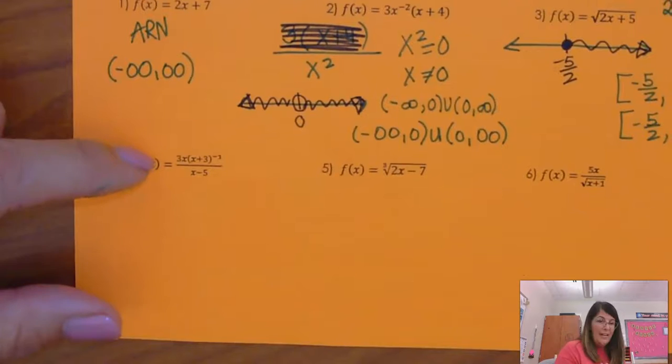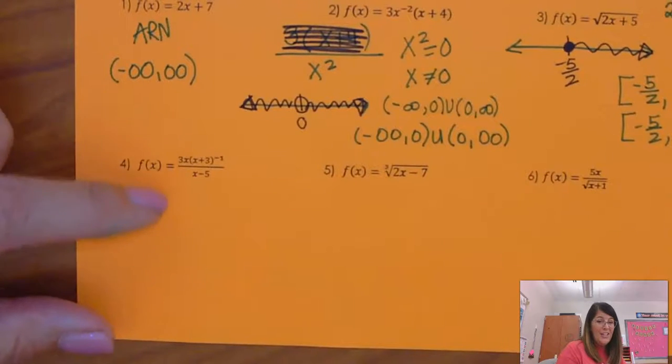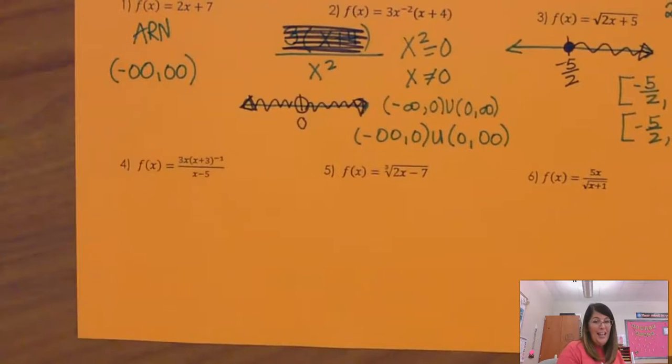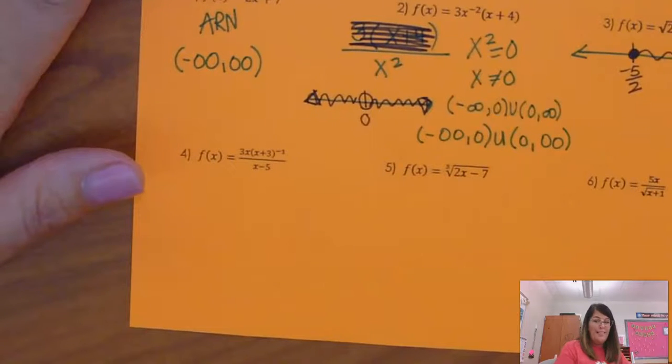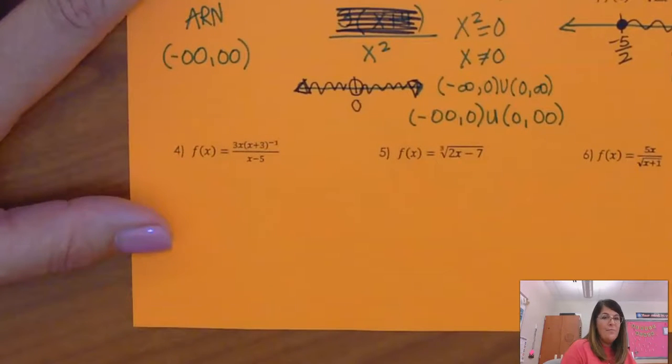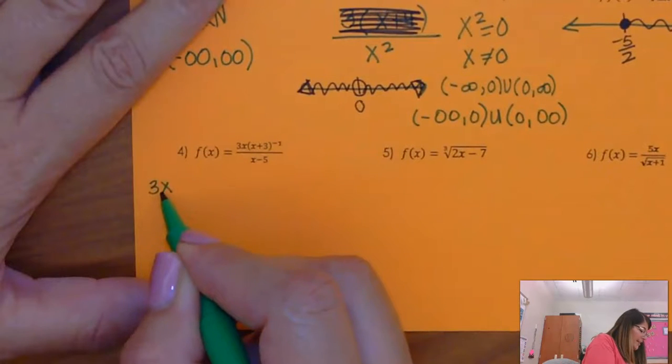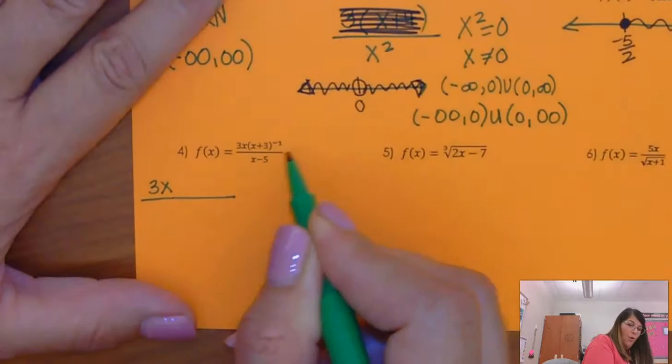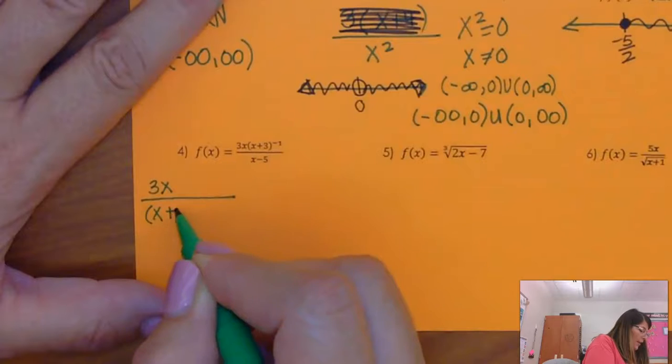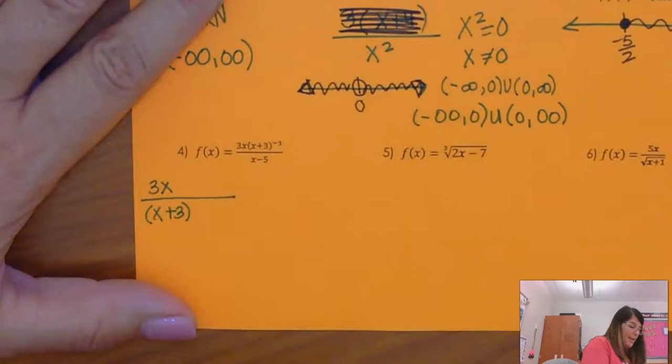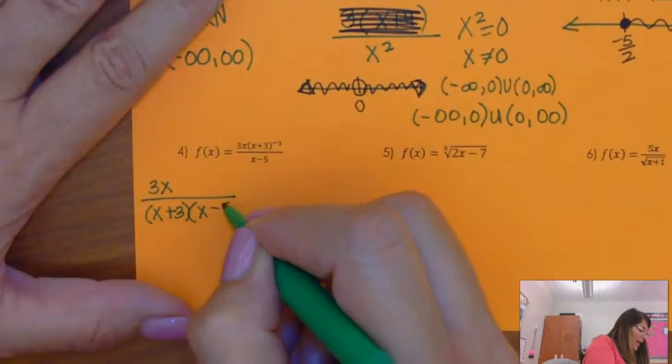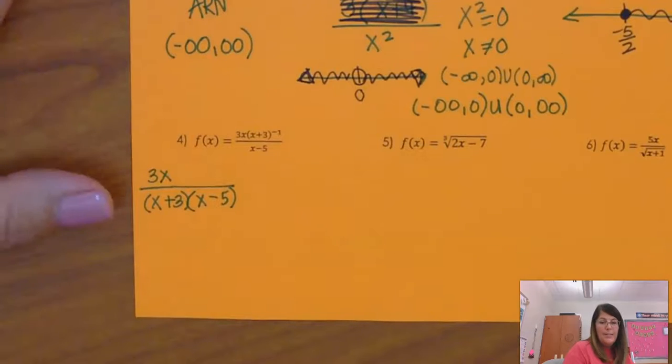All right. Moving on along. So when I look at this one, I see a fraction and I have a negative exponent. So the first thing I'm going to do is I'm going to rewrite this so that it has, I get rid of the negative exponent. The 3x doesn't need to move. That whole group, that whole thing, x plus 3 goes to the denominator. And it's multiplied by that x minus 5. So step 1 is going to be getting rid of the negative exponent.